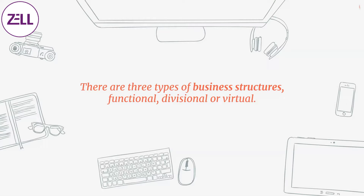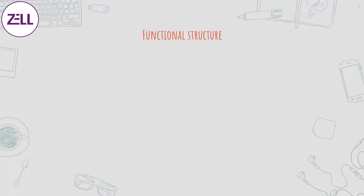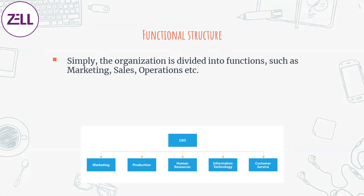There are three types of business structures mainly: functional, divisional, and virtual. In a functional structure, as the name suggests, you divide the whole organization into functions — marketing, sales, operations, and all sorts of things. Each function is then responsible for the whole company's marketing, the whole company's sales, the whole company's operations. It's not to do with the area or the product — it's functional expertise that we look at.